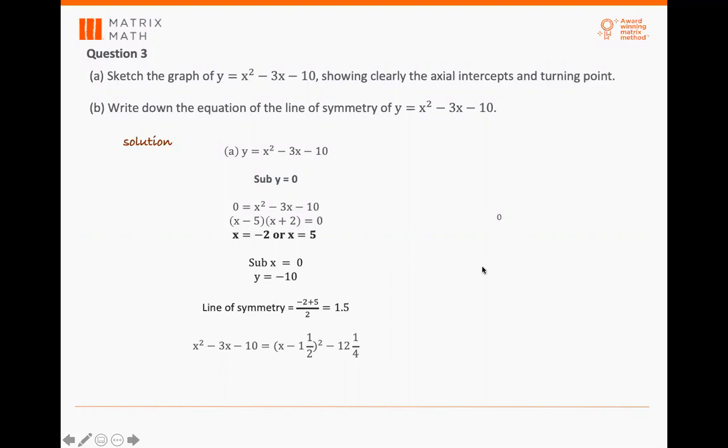Once you obtain these few points here, you'll be able to plot your graph. So we plot x and y-axis first. Zero here is the origin. So I start to plot my x-axis first. I will have a negative 2 and a 5.